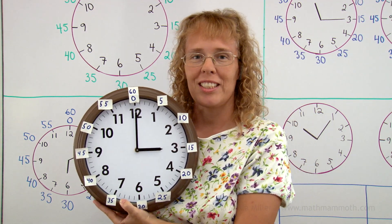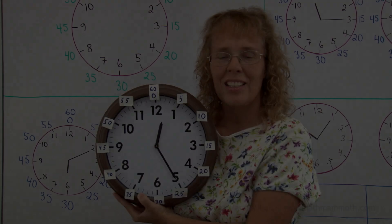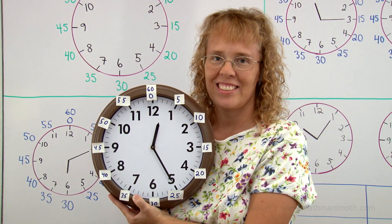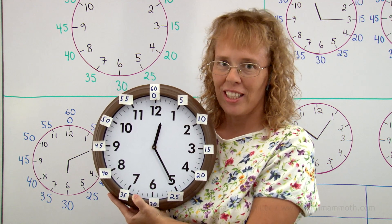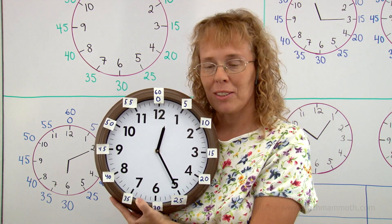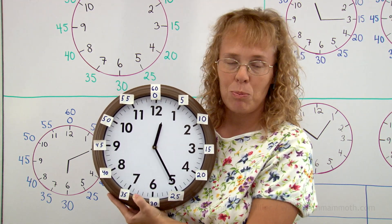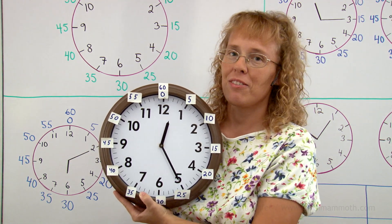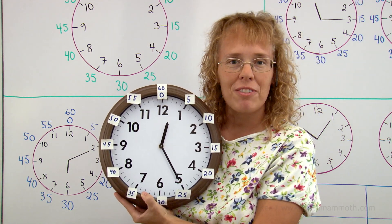Now let's do some few exercises here. What time is it now? Can you tell? Look at the hour hand. It is between 12 and 1. That means 12 hours. And the minute hand is pointing to 25. Not 5 but 25. The time is 12.25.